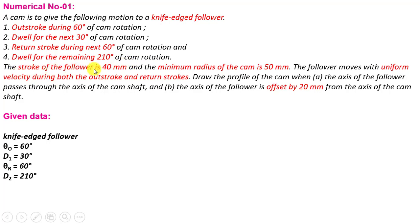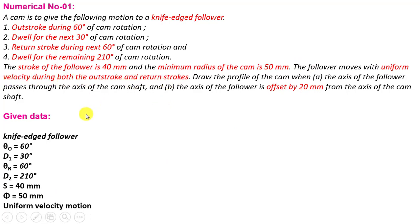The stroke of the follower is 40 mm (S = 40 mm) and the minimum radius of the cam is 50 mm (r = 50 mm). The follower moves with uniform velocity during both the outstroke and return stroke.